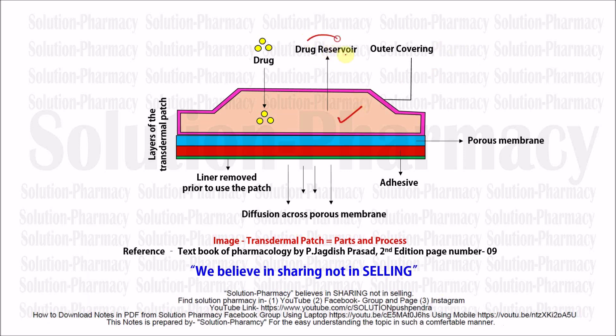The main part shown in this diagram is called the drug reservoir. The drug reservoir is a place where the drug is kept for release, so that the drug can cross the skin and produce a desirable effect at a particular or restricted part of the skin.